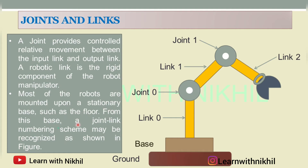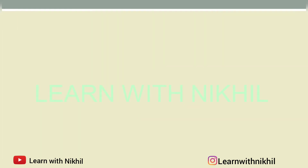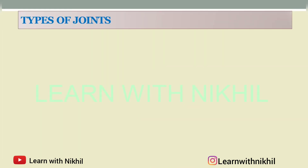From this base, a joint-link numbering scheme may be recognized as shown in the figure. Here I have shown the numbering of the links and joints. Next, we'll study about the different types of joints.